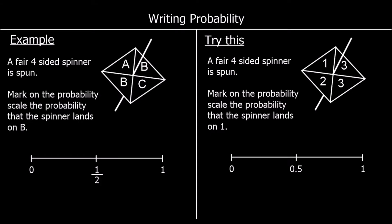The probability of something happening is how likely it is to happen. We can write probability as a fraction, a decimal, or a percentage. There's a probability scale that goes from 0 up to 1. If the probability of something is 0, it will absolutely not happen — there's no chance of it happening. If the probability is 1, it's definitely going to happen; it's certain to happen.